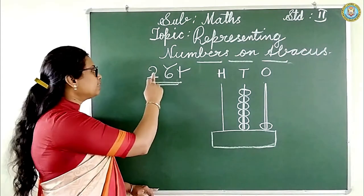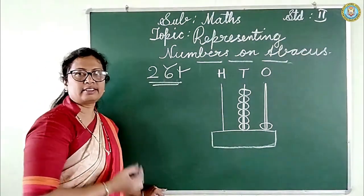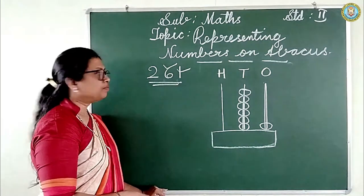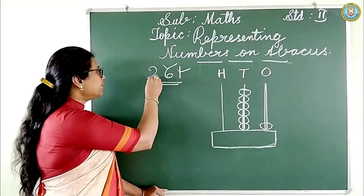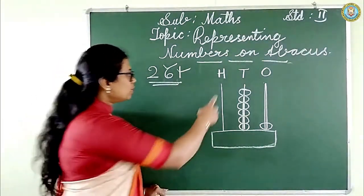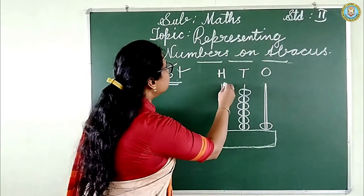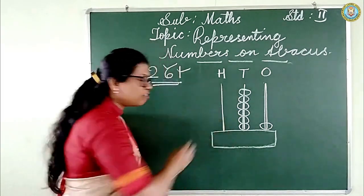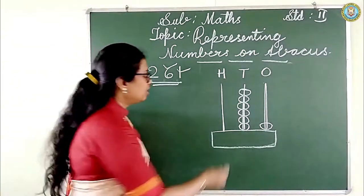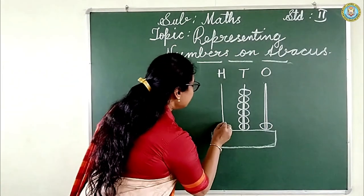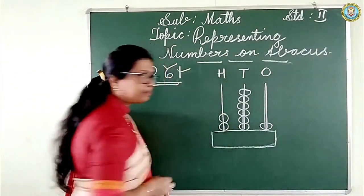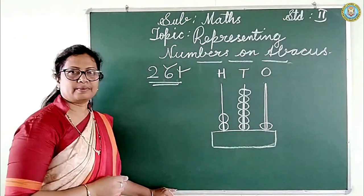Now go to the next place — this is the hundreds place. In hundreds the digit given is two. So in the hundreds spike how many beads do you put? Two beads: one, two.